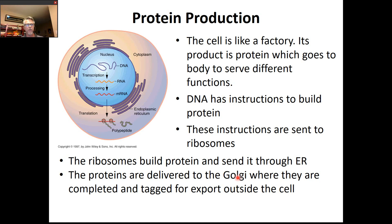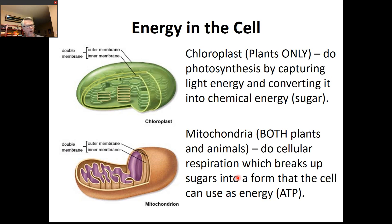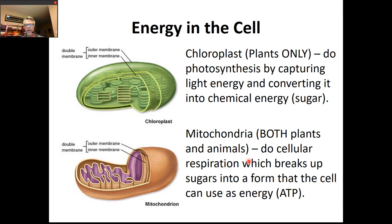That's how cells make proteins. Now for energy in the cell — we have two main organelles that produce energy. The chloroplast, found only in plants, captures light energy and converts it into chemical energy using the process of photosynthesis. The other energy-relevant organelle is the mitochondria, found in both plants and animals. This is where cellular respiration happens — the sugar that comes from photosynthesis gets broken down and the energy is stored as ATP.